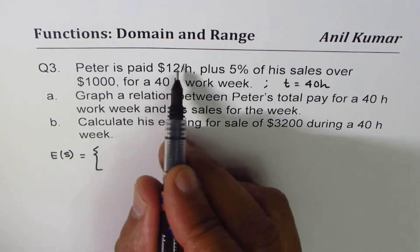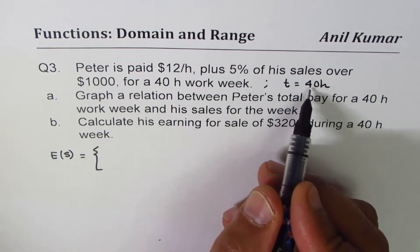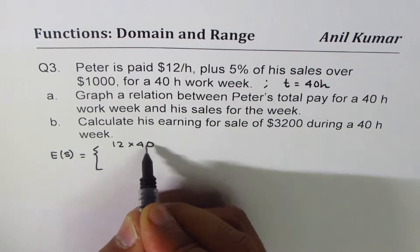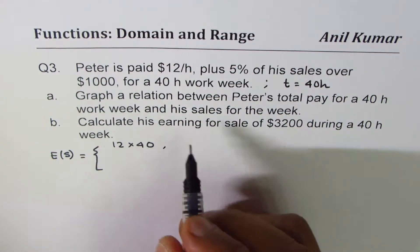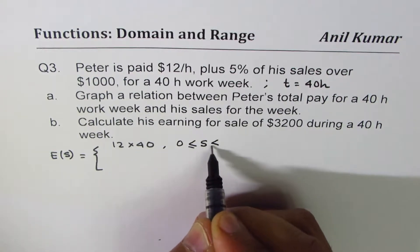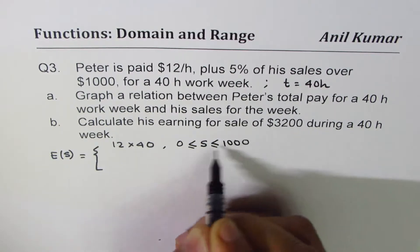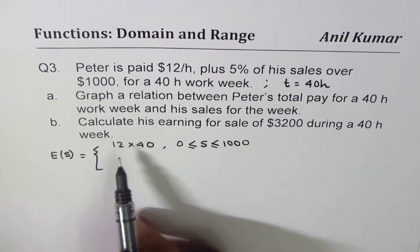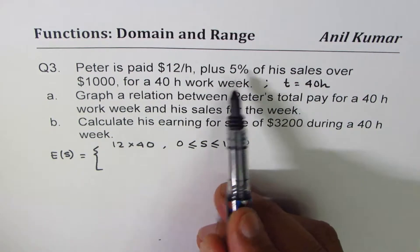12 times 40, for $12 per hour where number of hours is 40. So let me write this as 12 times 40 if the sales is from zero to thousand. Now anything over thousand we get commission of five percent for Peter.